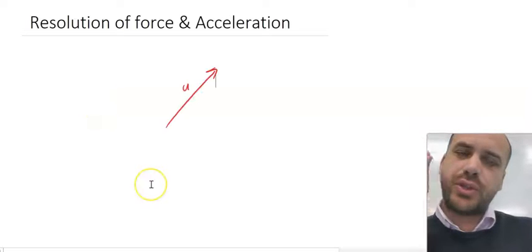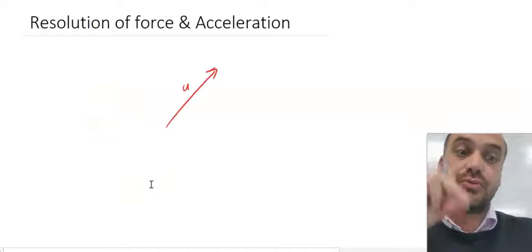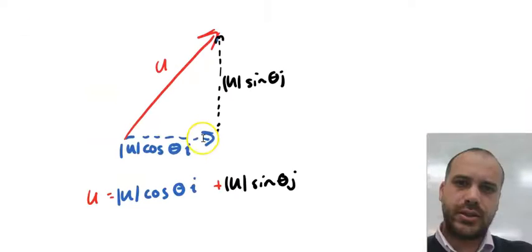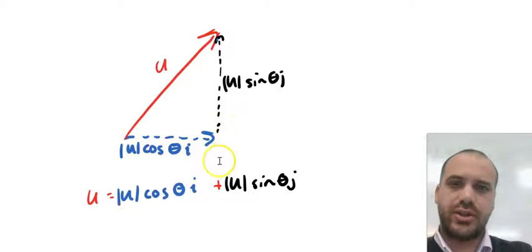All right, so let's draw ourselves a vector, and we can resolve that vector into rectangular components. So nothing new here, u cos theta i, u sine theta j.